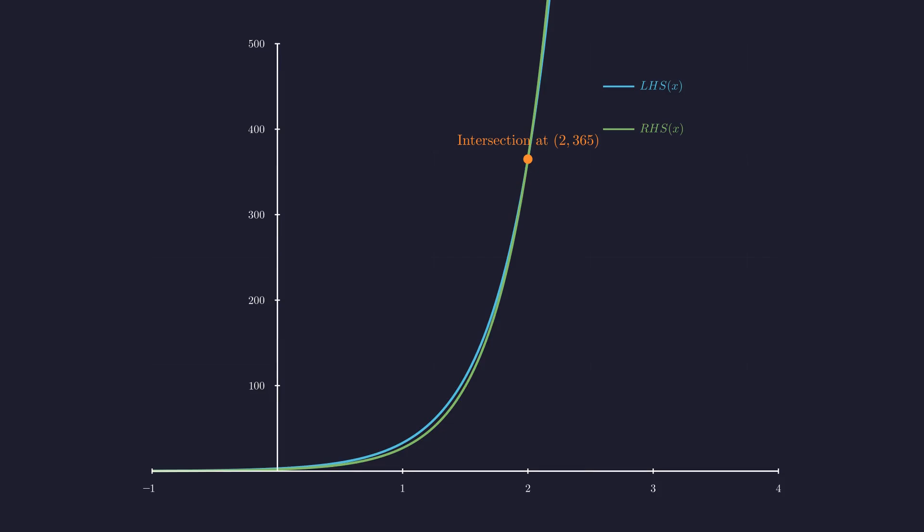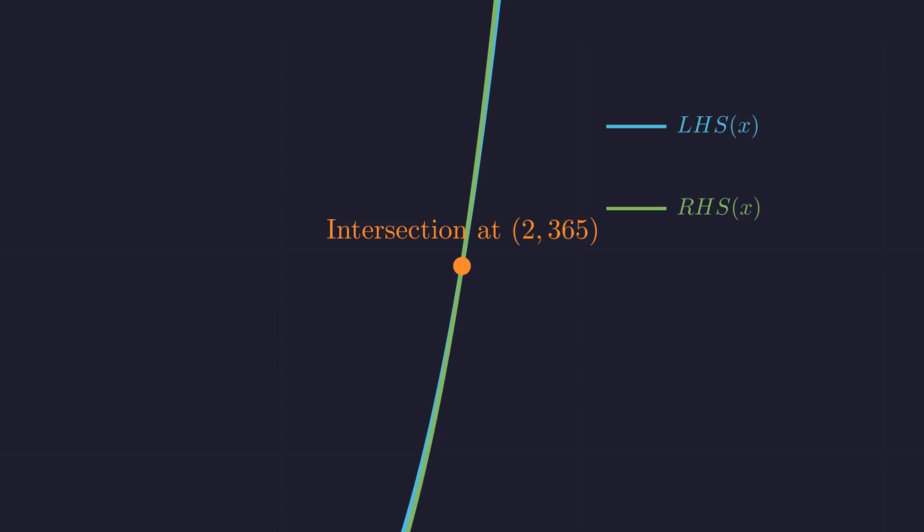And sure enough, we can see them intersecting at x equals two. Let's take a closer look at this intersection point. You can see how precisely these two exponential curves meet at exactly the point where x equals two and y equals 365.